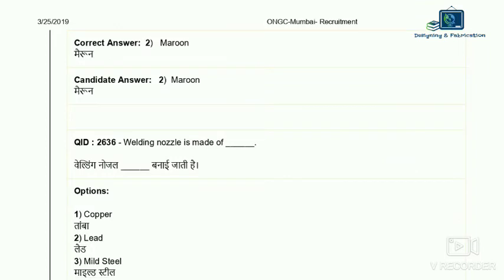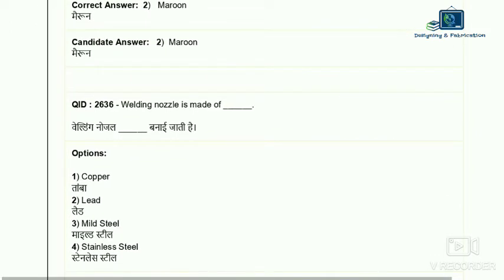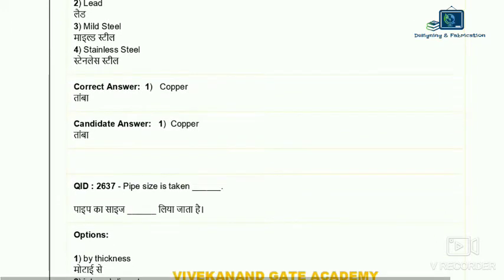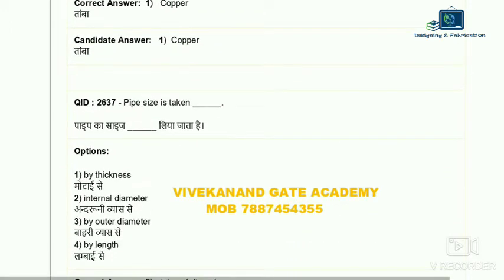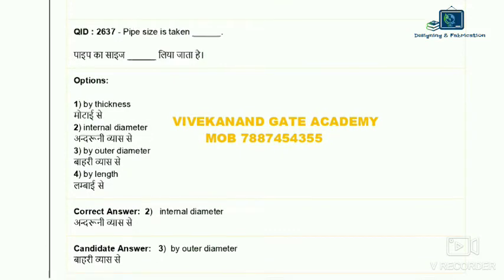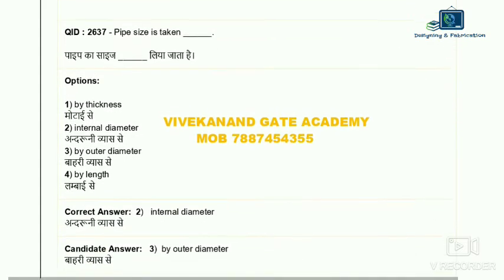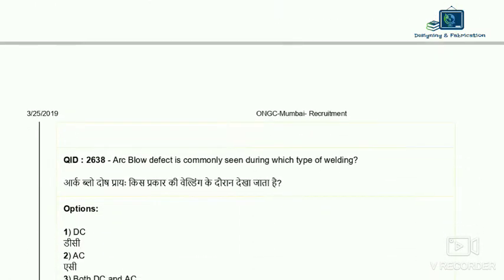Question 36: what is the welding nozzle made of? A welding nozzle and welding blow pipe are different. The welding nozzle is made of copper, but the cutting blow pipe is made of brass. So the correct answer is copper — option one. Question 37: pipe size is determined by wall thickness. Pipe size depends on the internal diameter and standard wall thickness, so the correct answer is by thickness.